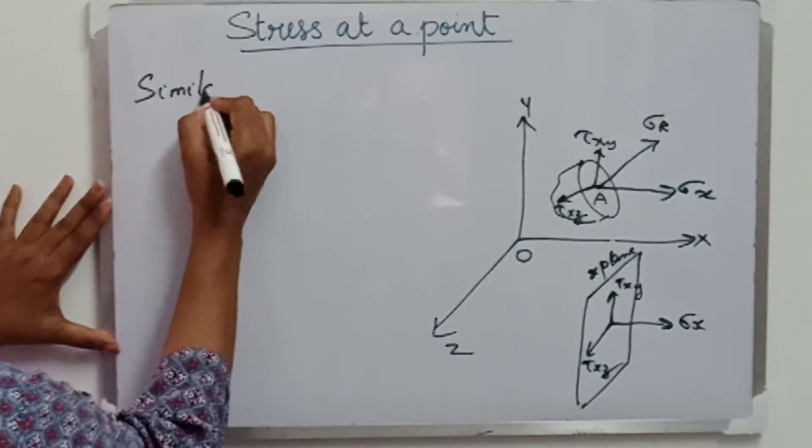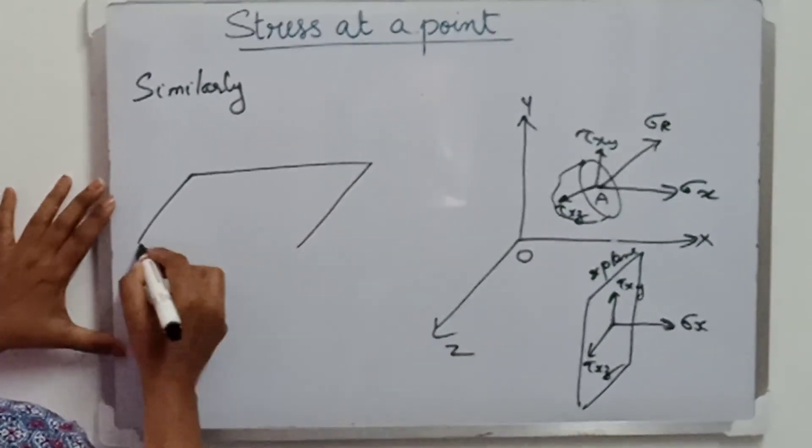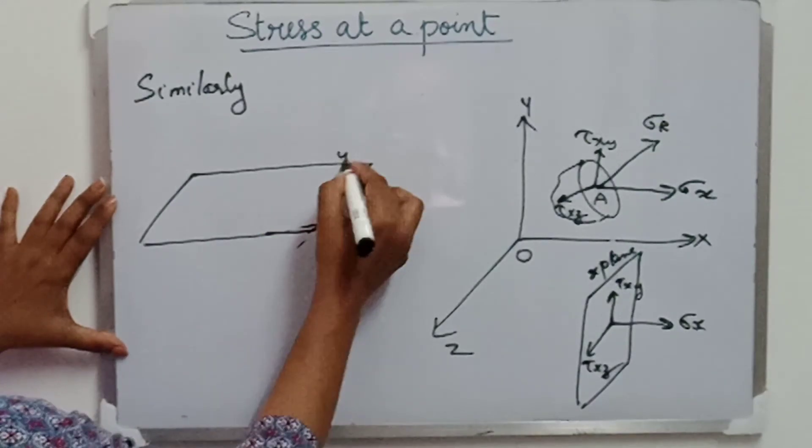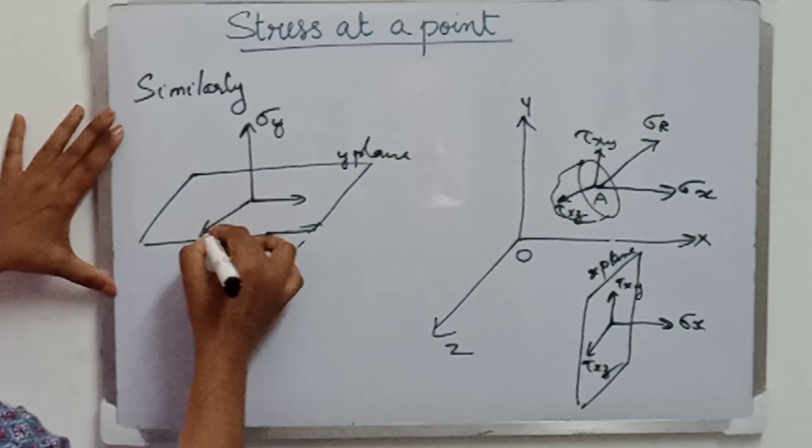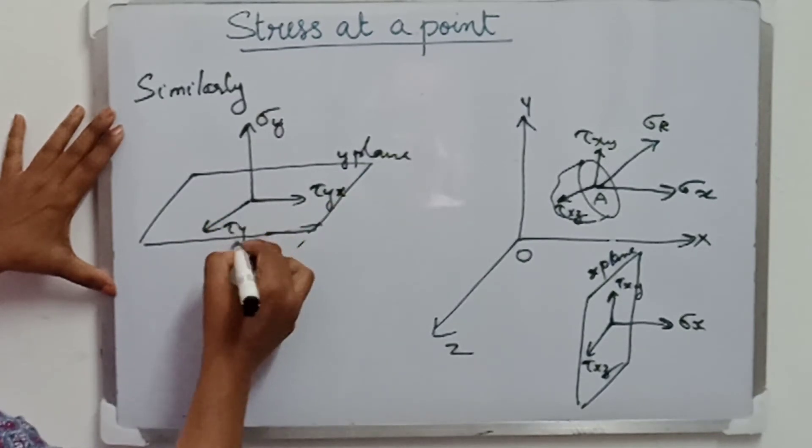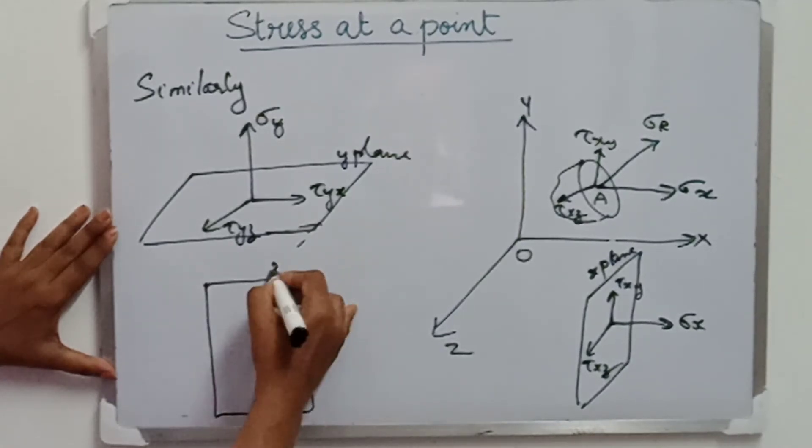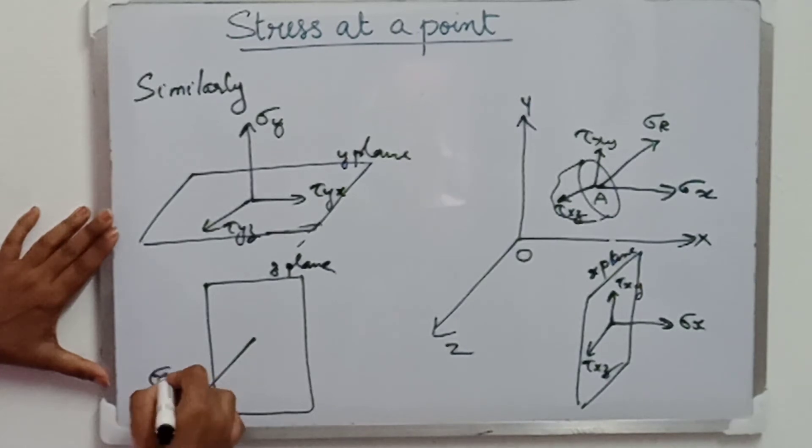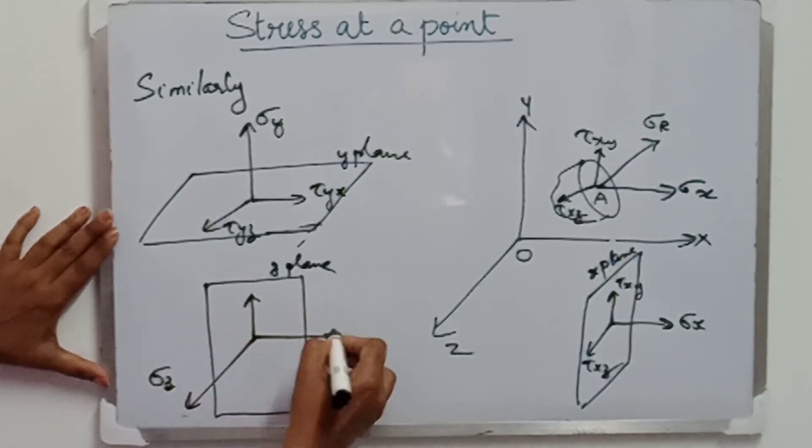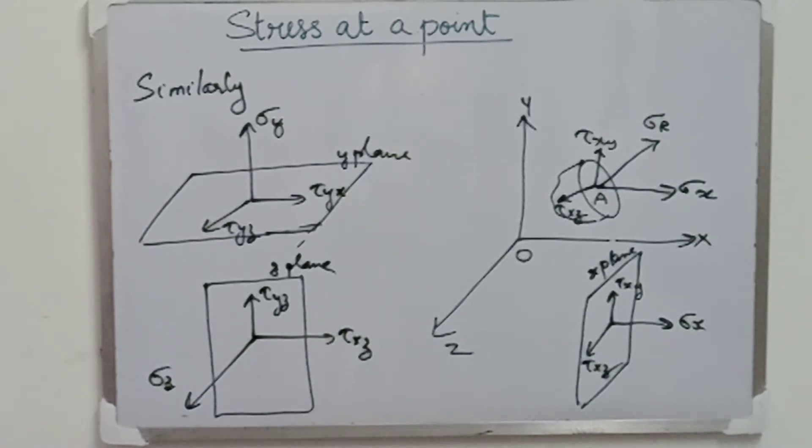Similarly, let us consider the plane that is a horizontal plane where the normal is in the y direction. So, I am calling it as y plane and marking all the components of stress in that plane. Another plane through which the point is passing is z plane and here I am drawing the stress component sigma z, tau xz and tau yz.